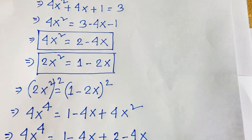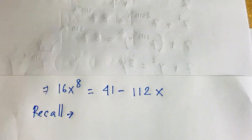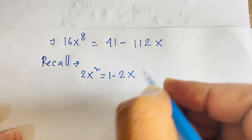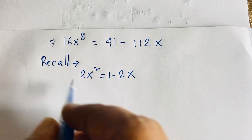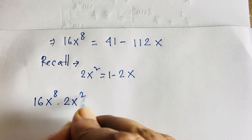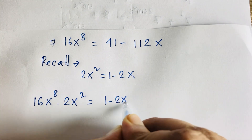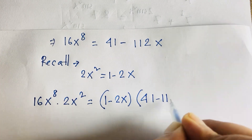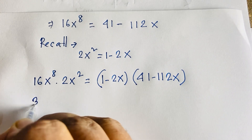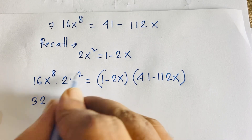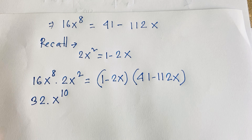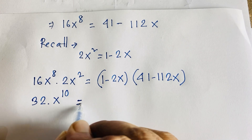Recall that 2x² = 1 minus 2x. Now I multiply the equation 16x⁸ = 41 minus 112x by 2x² on both sides. On the left: 16 times 2 = 32, and x⁸ times x² = x^10 by exponential rules. Our target is x^10, so let's find the right side.